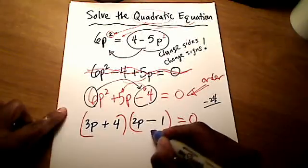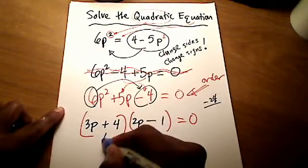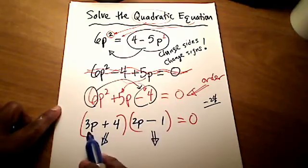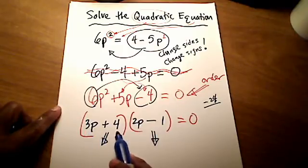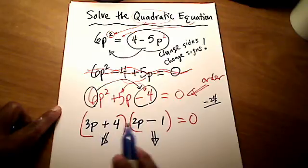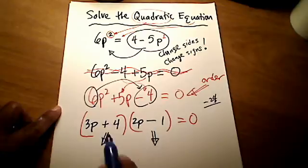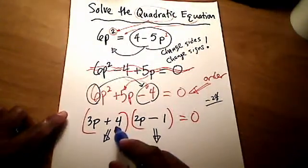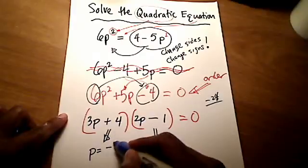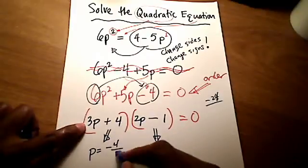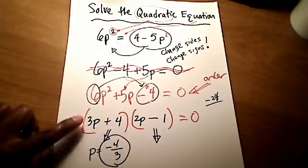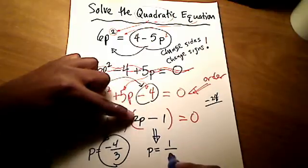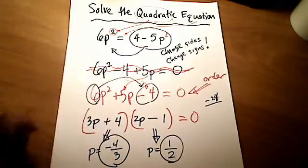My last step is, see if you can jump straight to the answers, the two answers. Technically, mathematically speaking, we're going to set each of these parentheses equal to 0 because we're multiplying two things and our product is 0. So one of them has to be 0, or maybe both are 0. But the shortcut step is to change this sign from positive 4 to negative 4, and this coefficient of 3 goes to the denominator. So there's one answer. Same thing here, change this negative 1 to positive 1, and that coefficient of 2 moves to the bottom. So there are my two answers.